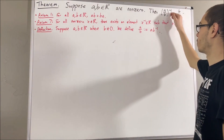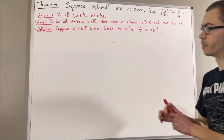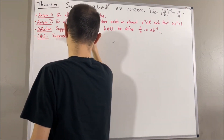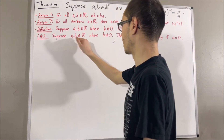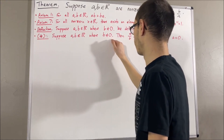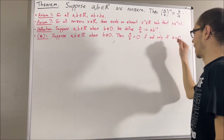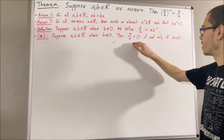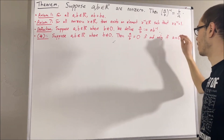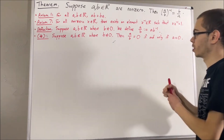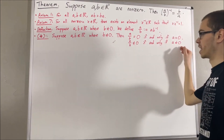And to make sense out of the reciprocal of A over B, we have the following preliminary result which we have proven. We have proven: given real numbers A and B where B is not equal to 0, then A over B is equal to 0 if and only if A is equal to 0. Now, this statement is equivalent to saying that this is false if and only if this is false. In other words, A over B is not equal to 0 if and only if A is not equal to 0.